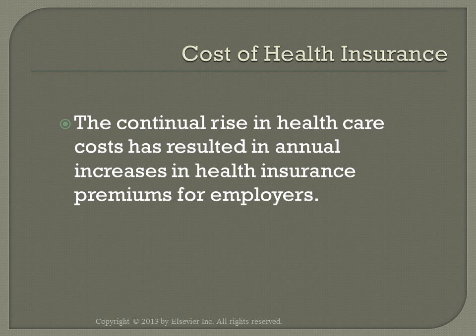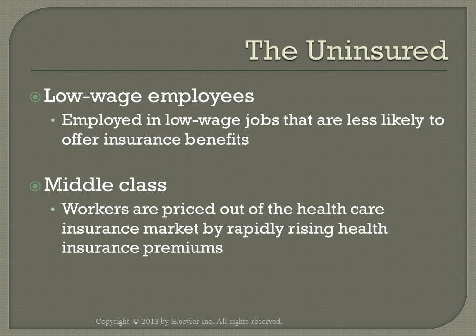The Affordable Care Act requires the federal government to create a process where insurers must justify unreasonable premium increases. Starting in 2014, citizens and legal residents had to obtain health insurance or pay a penalty. Exemptions applied if coverage would cost more than 8% of income, or for low-income individuals, religious exemptions, undocumented immigrants, incarcerated individuals, or American Indians.